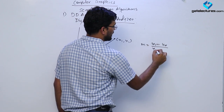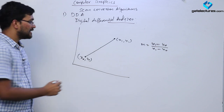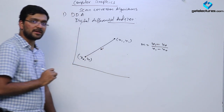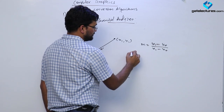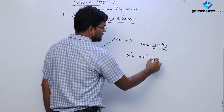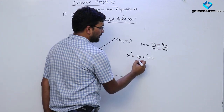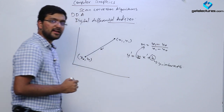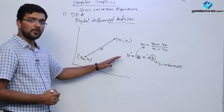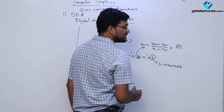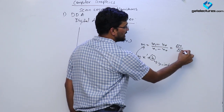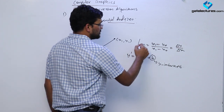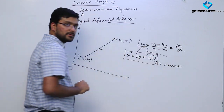The slope is y1 minus y0 upon x1 minus x0. Another thing: if I know any x — let's say x-dash at this particular line — how can I compute y-dash? I can compute y-dash with m times x-dash plus b. My m is the slope of the line and b is the y-intercept. These are the two basic formulas. y1 minus y0 is considered as delta y, and x1 minus x0 is considered as delta x.